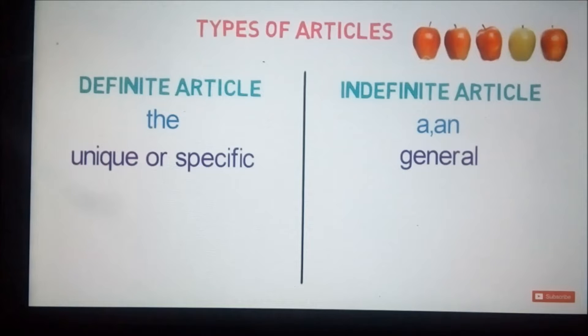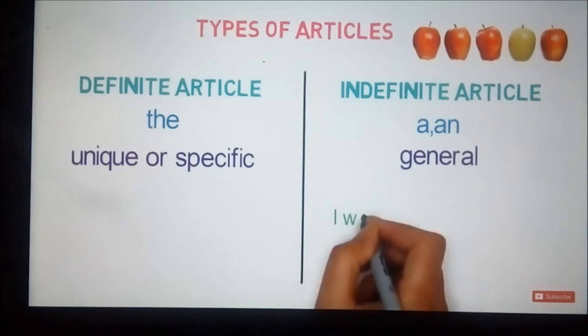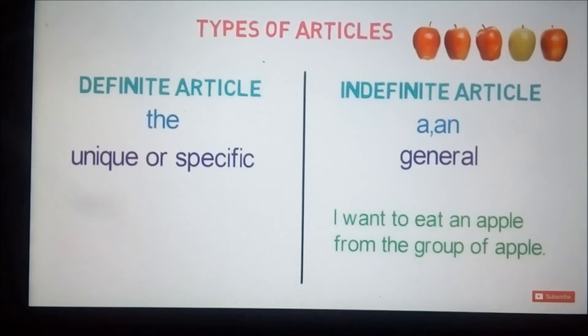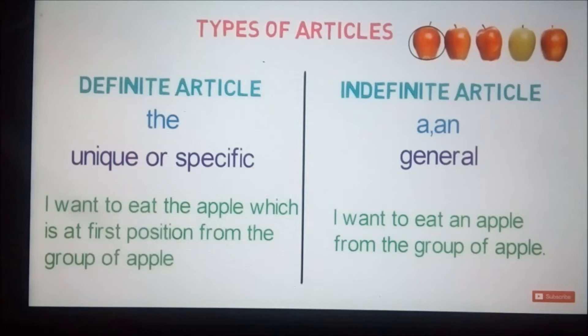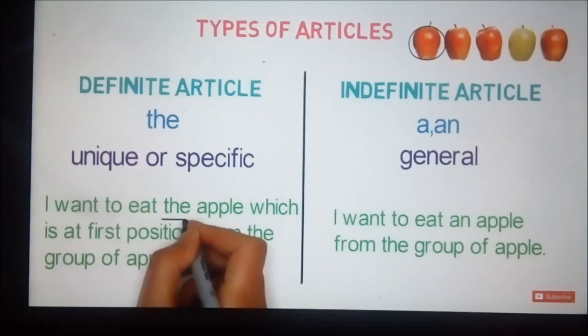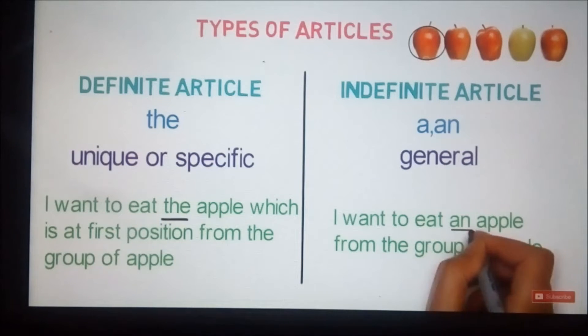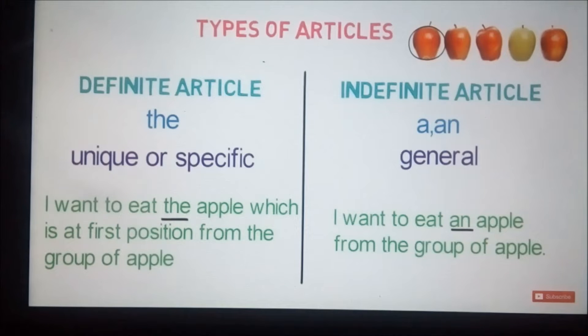Suppose there is a group of apples in front of you and you are given a choice to eat one of them. If you want to eat any one from it, what will you say? You will say, 'I want to eat an apple from the group of apples.' Now, suppose you want to eat a specific apple from the group, let's say the first one. You will say, 'I want to eat the apple which is at first position from the group of apples.' You can notice here how we use 'the' for pointing out a specific apple and 'an' for a generalized apple. You can also notice that we have used 'an' and not 'a' for pointing apple in general context. Let's understand why we used 'an' instead of 'a' here.